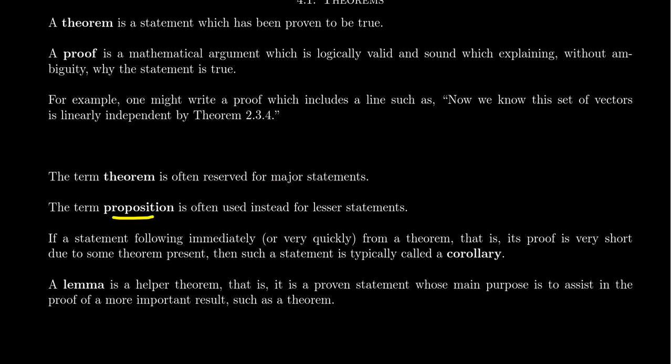Conversely, a proposition is a proven statement which might be of less significance or has an easier proof. So it's a lesser statement. The theorems are the big ones. The propositions are the less ones.